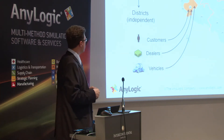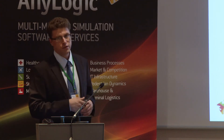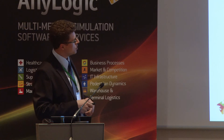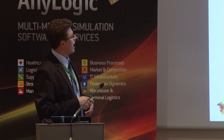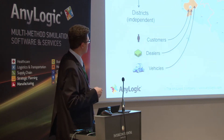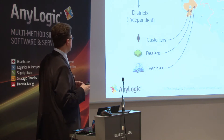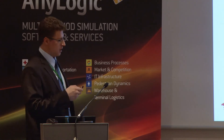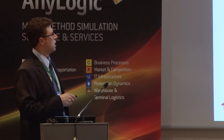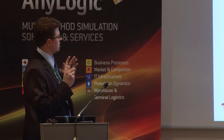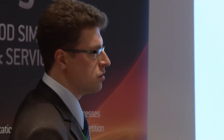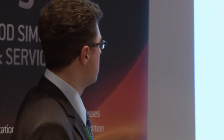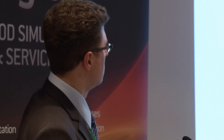In this model we considered the territory of the United States divided by regions, and each region was divided by districts. All these territories were considered totally independent. Customers and potential customers were living in a particular district and they did not move from one to another. They did not interact with people from other districts or regions. Each district contained customers, dealers, and vehicles to be sold.